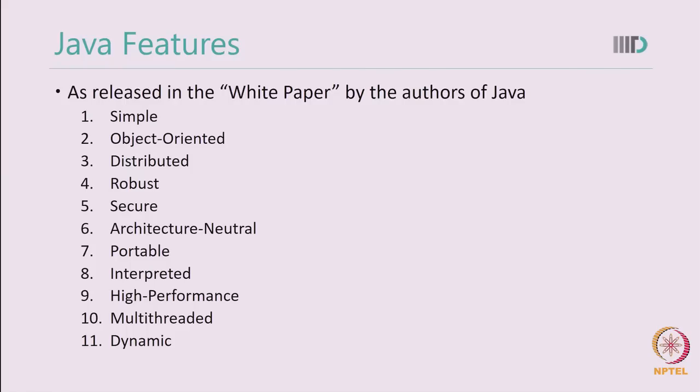Java from the very beginning also supported distributed programming by providing several libraries which enable socket programming. The Java Virtual Machine ensures that Java programs can run on different architectures. Java also has the catchphrase of 'compile once, run anywhere.' Java programs are portable — they can be taken to different machines, and the JVM interprets and runs them. From the very beginning, Java supports multi-threading, and Java programs are optimized for high performance.